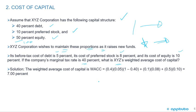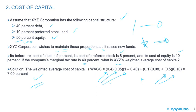It's just a weighted average. Starting with debt: 40% times the before-tax cost times one minus the tax rate, plus 10% on the preferred stock times the cost of the stock, plus 50% on the equity times the cost of equity — and we get 7%. So the weighted average cost of capital should be fairly straightforward. The one little trick is when they give you the debt-to-equity ratio: the weight of debt equals the D/E divided by one plus the D/E. That's the last slide for this LOS.